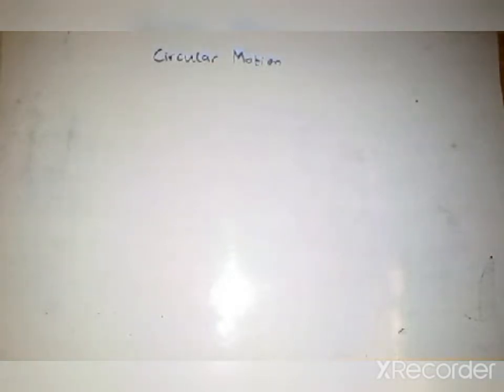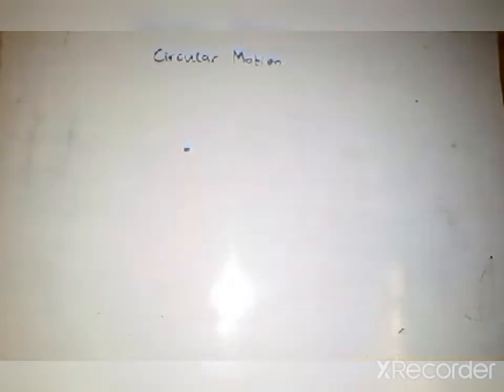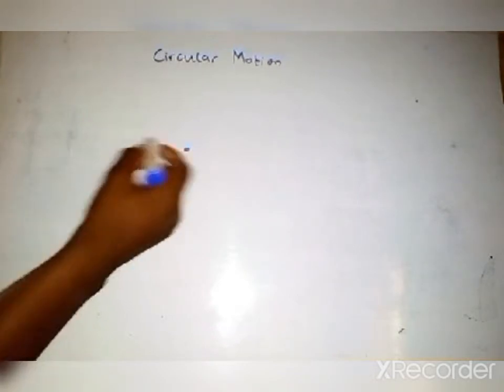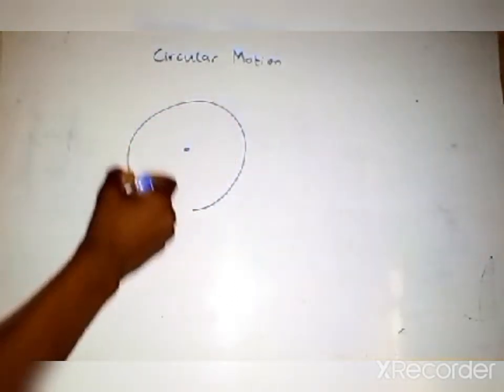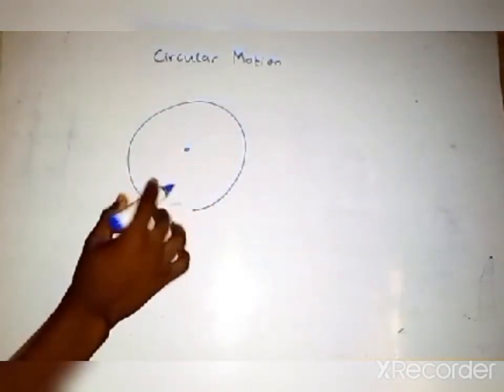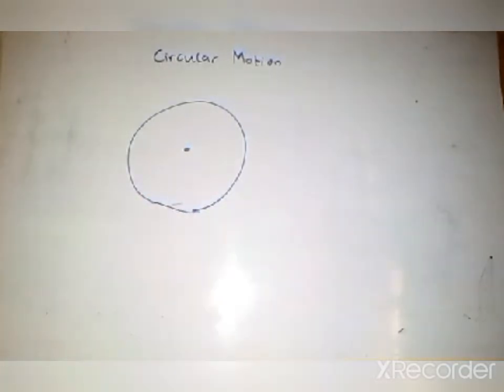Hello guys, in today's video we will deal with circular motion. So what is circular motion? Let's say an object moves about a fixed point. Circular motion is the movement of an object about a fixed point with constant speed, but the moving direction changes.